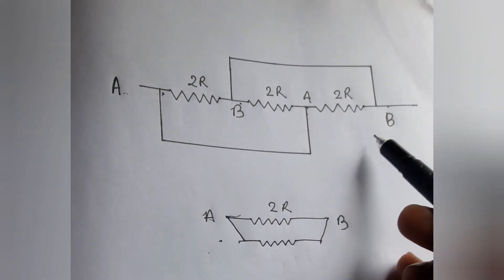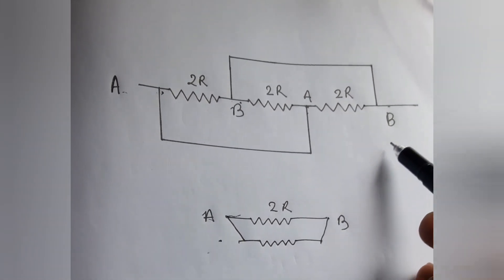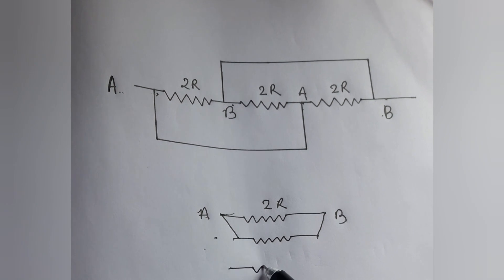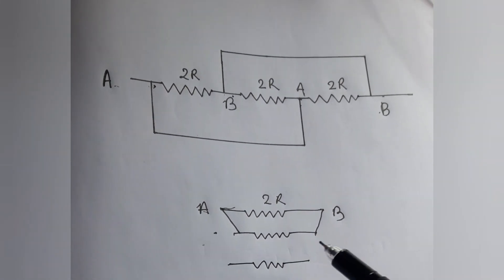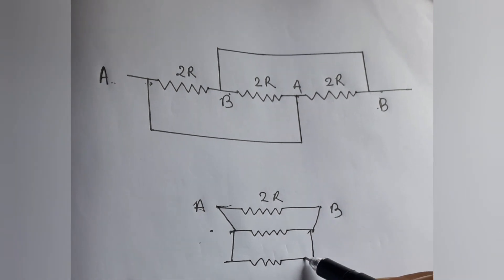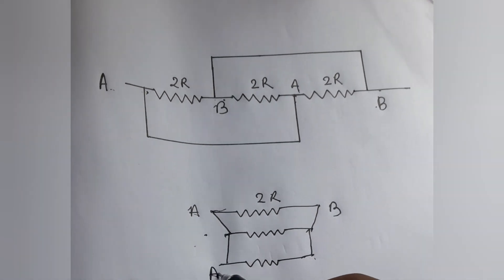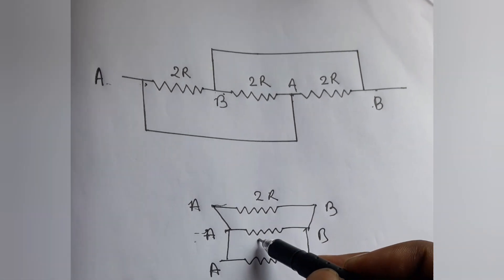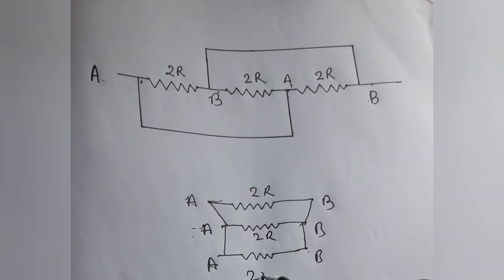And the second resistance 2R also has two ends A and B. Now we draw the third resistance 2R. This is A and this is B. This is 2R, this is 2R.